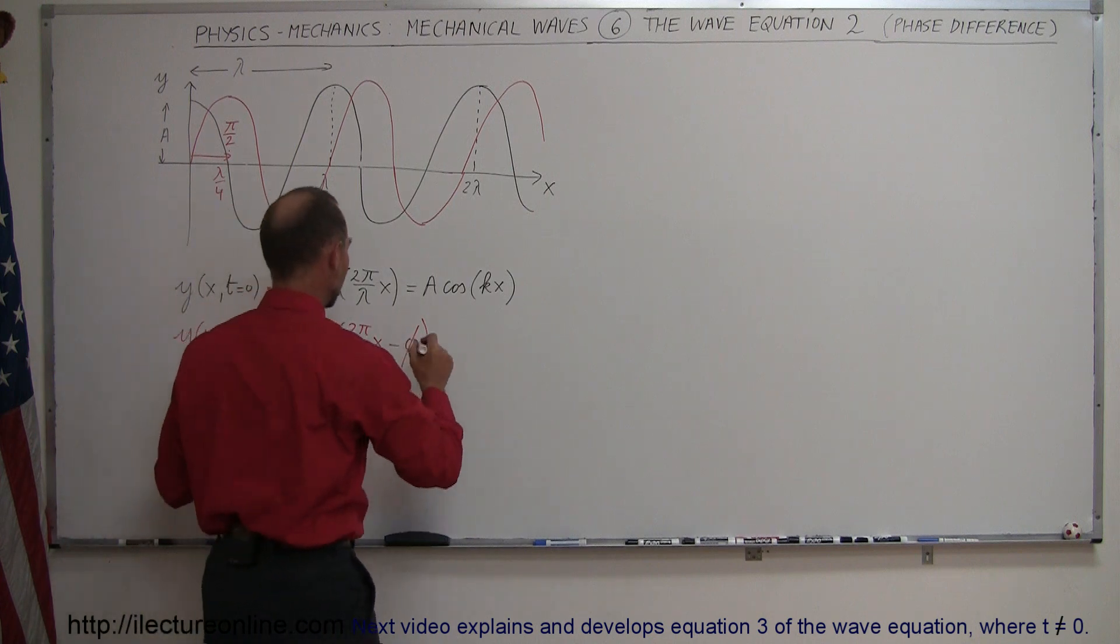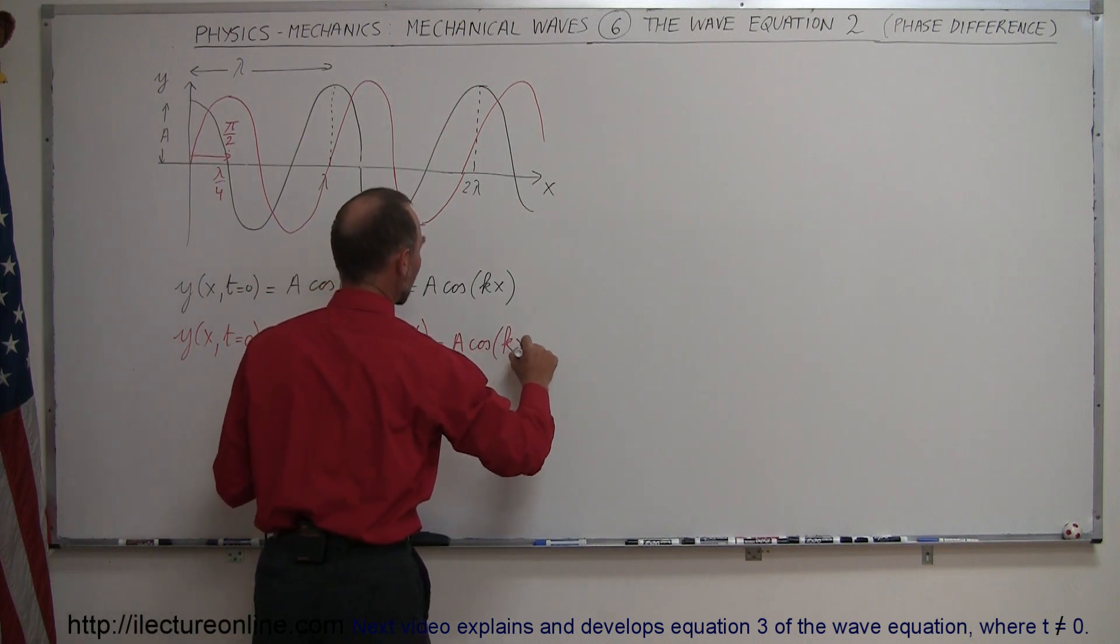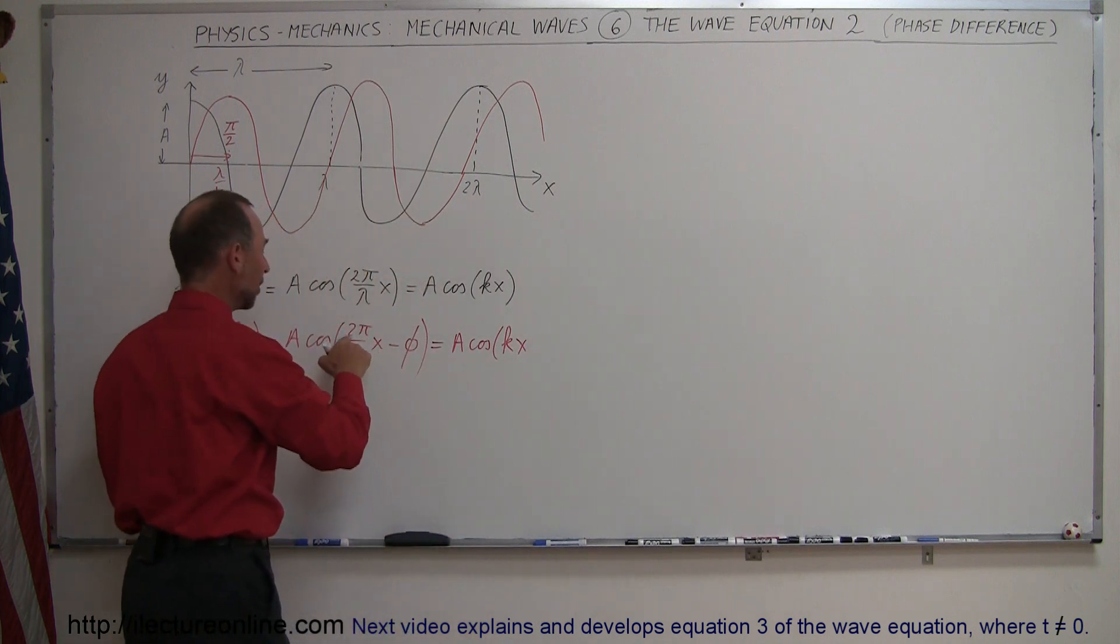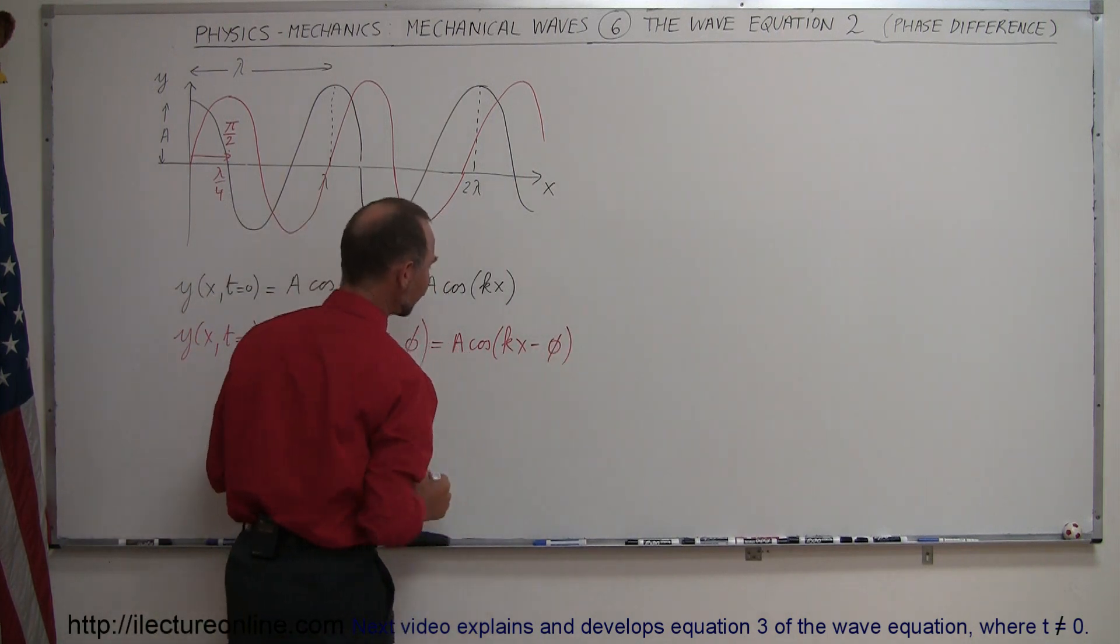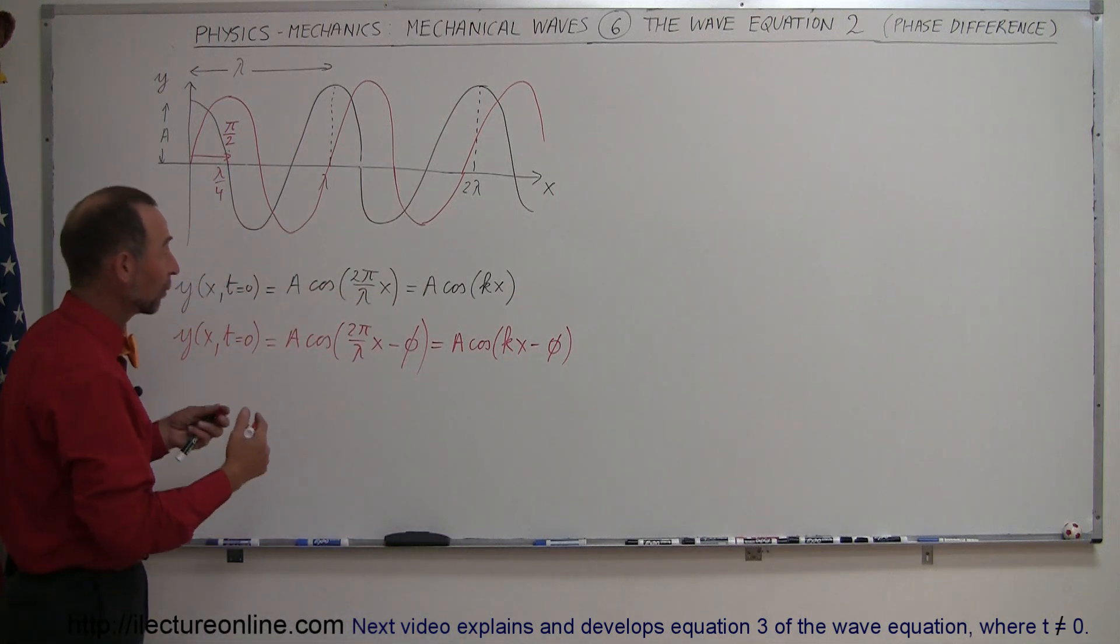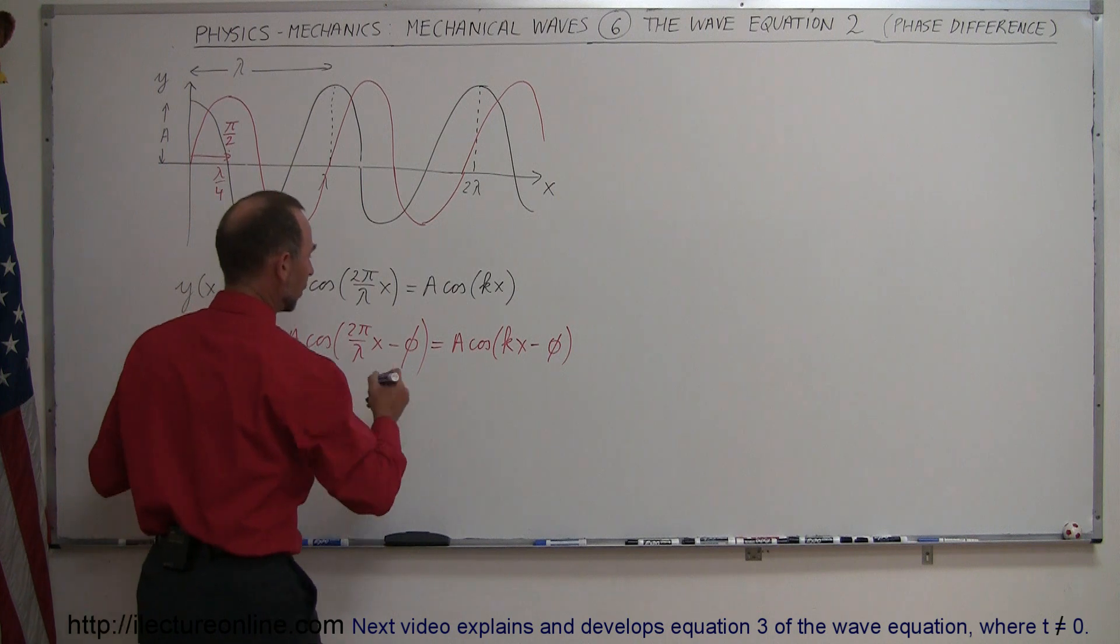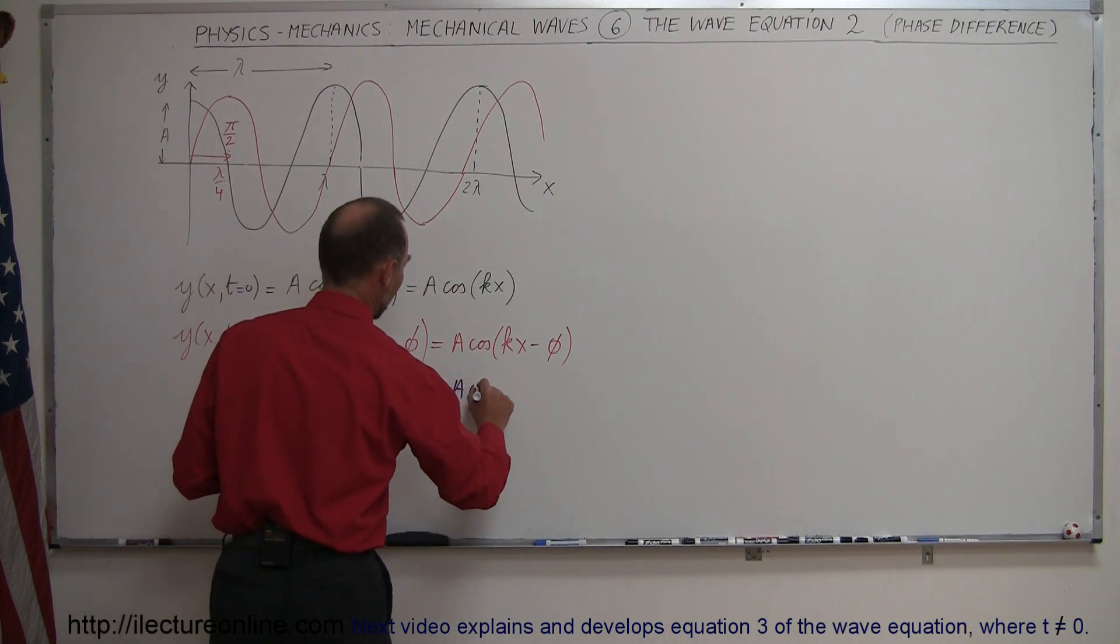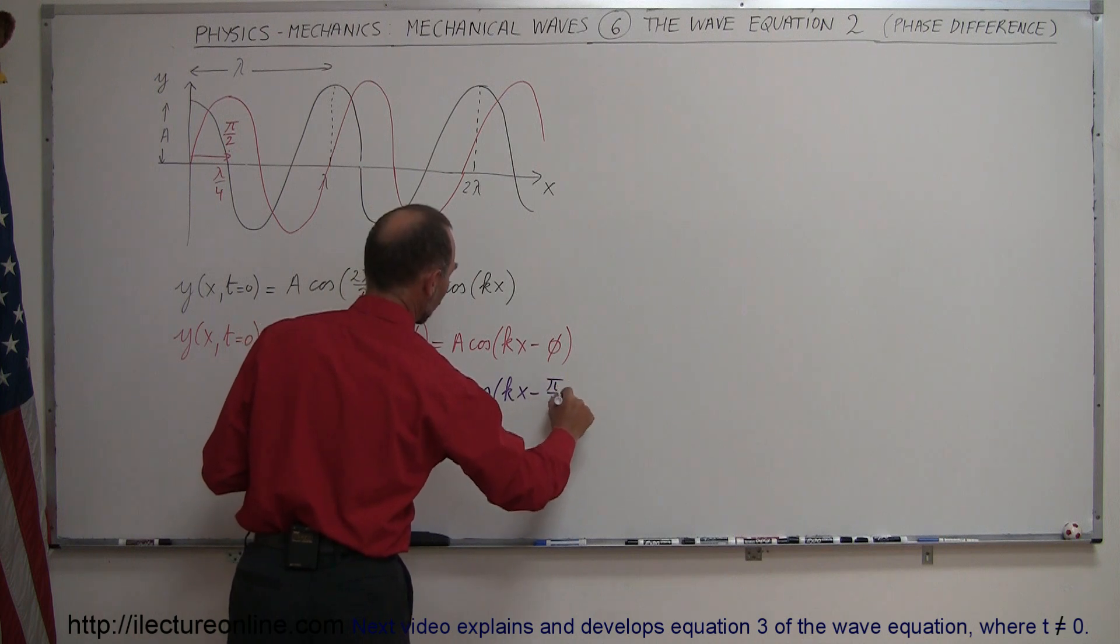And so this would then become, this is equal to a times a cosine of kx. Remember, k represents the wave number, which is 2 pi over lambda, minus the phase angle. And of course, if we then plug in what that phase angle is, in this case, that would be equal to a times a cosine of kx minus pi over 2.